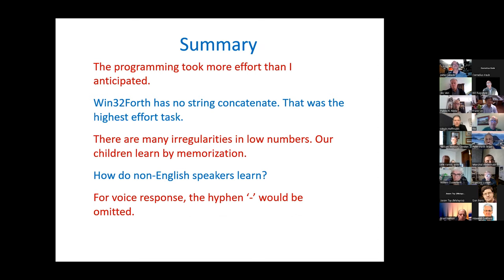So in summary, the programming took more review than I thought. I thought this was going to be kind of a little quick thing and just type it out and type the code the first time through it's going to work. Well, I found out due to the irregularities in language, there were more special cases than I realized. And the big aha, as I mentioned, was that win32 Forth has no string concatenate. So I actually spent the most time on that. I rewrote it four times until I got one that I was really satisfied with.